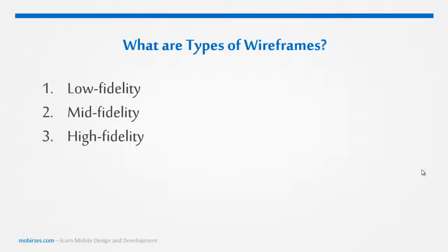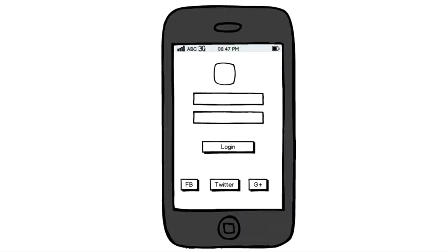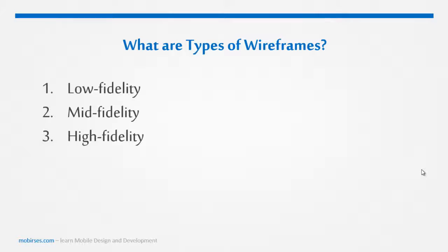The first one is low fidelity wireframes. The main point of low fidelity wireframes is to get as many ideas down as possible and as quickly as possible. These wireframes have a rough and sketchy design — they are done in minutes, very simple and very similar to sketches.